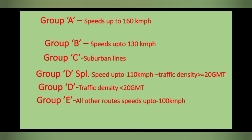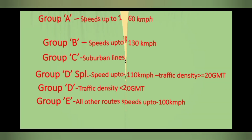All suburban lines are Group C routes. Group D routes are again classified as Group D Special and Group D. When the maximum permissible speed is up to 110 kmph and the annual traffic density is more than 20 GMT, it is under Group D Special routes. When the annual traffic density is less than 20 GMT, it is Group D route. All other routes with speed limit up to 100 kmph are Group E routes.